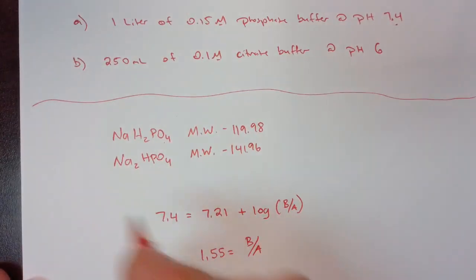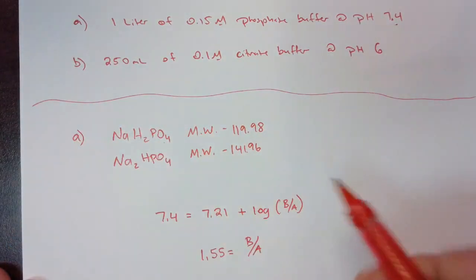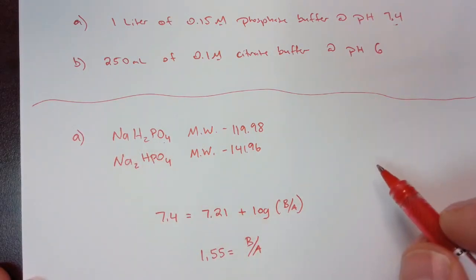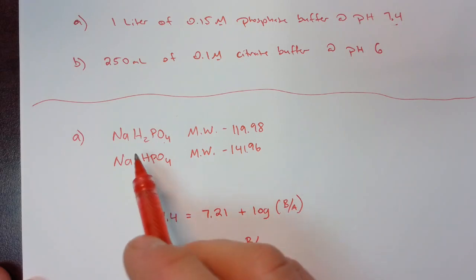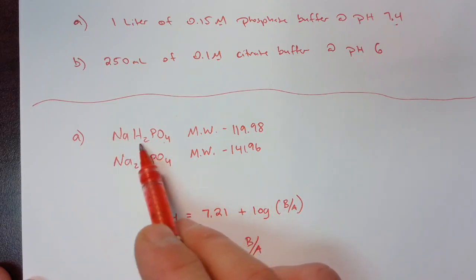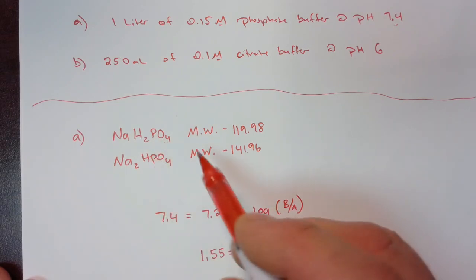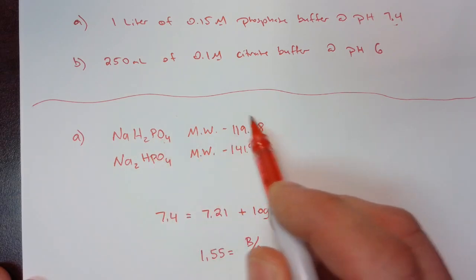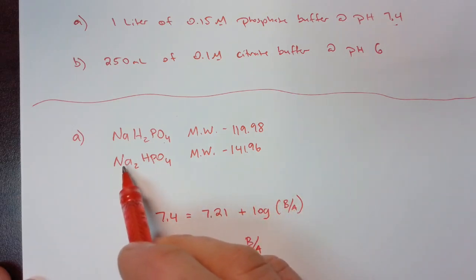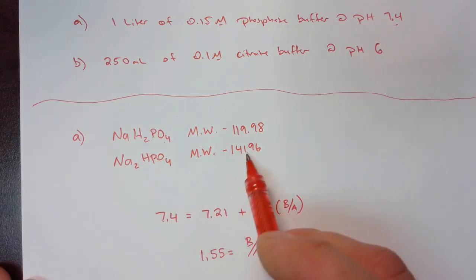To make the first buffer, we are going to need two salts of phosphate. Phosphoric acid is a triprotic acid. And today I'm just going to use the monobasic sodium salt, so that's one sodium ion and the H2PO4 minus 1 ion. And this has a molecular weight of 119.98. And then the dibasic sodium salt, which has a molecular weight of 141.96.